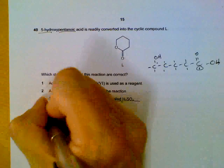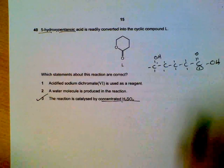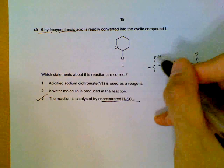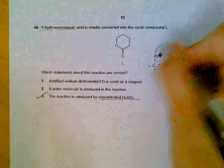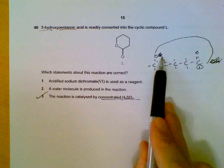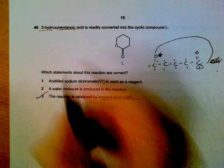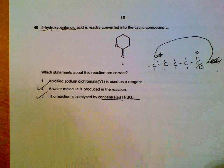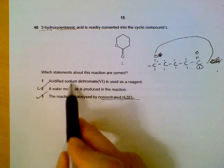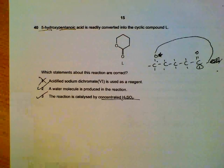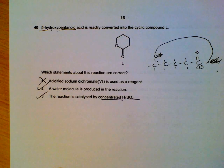Esterification requires concentrated sulfuric acid as a catalyst — that is the condition needed. When the ester bond forms, water is eliminated, so H2O is a product — statement 2 is correct. We do not need sodium dichromate; there is no oxidation taking place. Therefore statements 2 and 3 are correct.